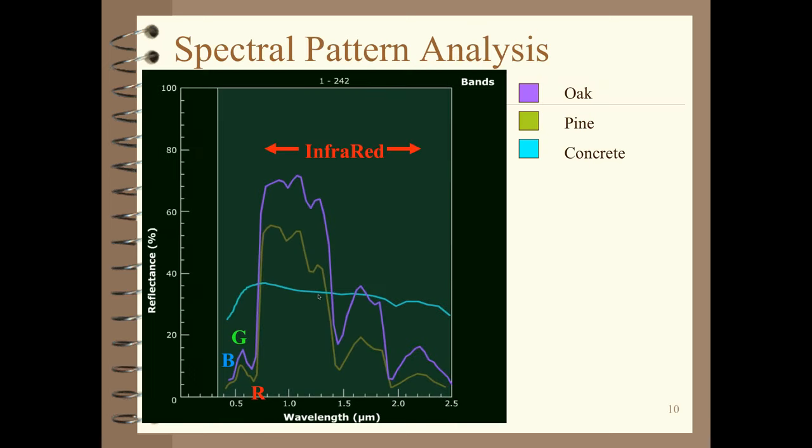This is called a spectral pattern analysis — a graph where the x-axis shows wavelength and the y-axis shows percent reflectance. Because we're remote sensing, we care about reflected light coming into our eyes, camera, or sensor. You can see three different objects: an oak leaf, a pine needle, and some concrete. In the visible portion of the spectrum — 0.4 to 0.7 microns — you can see that little peak in the green.